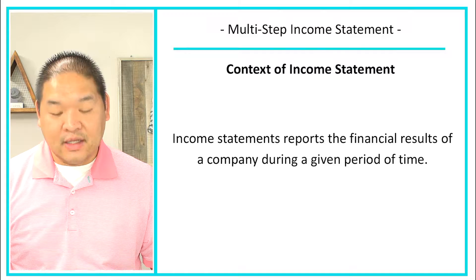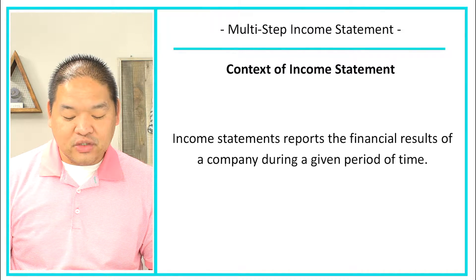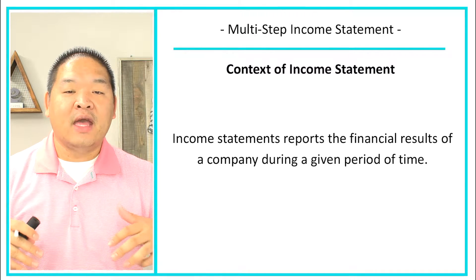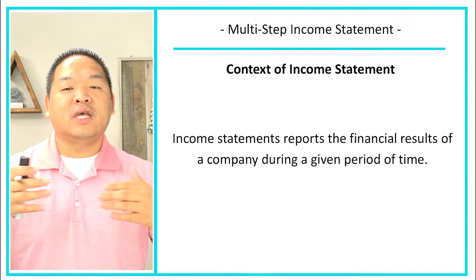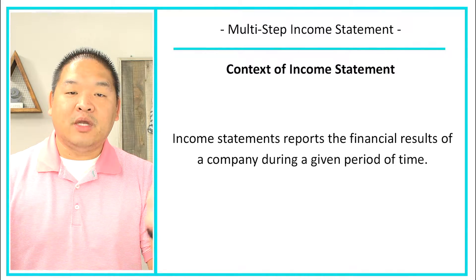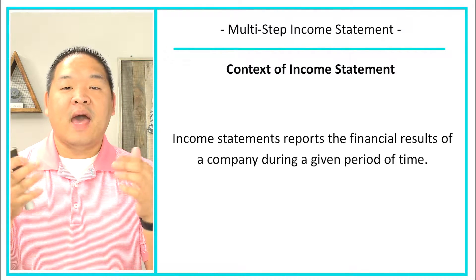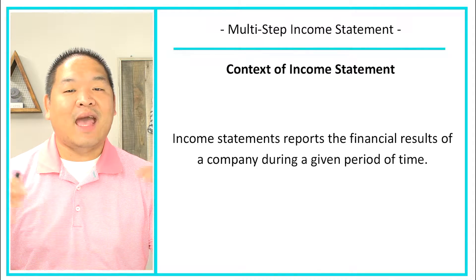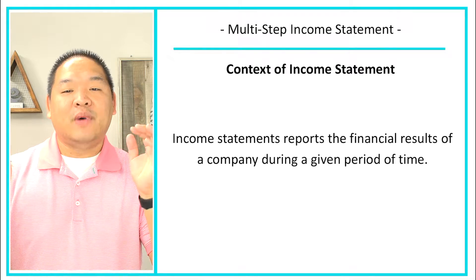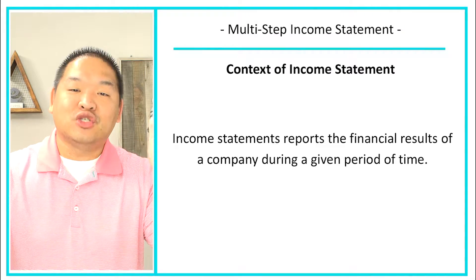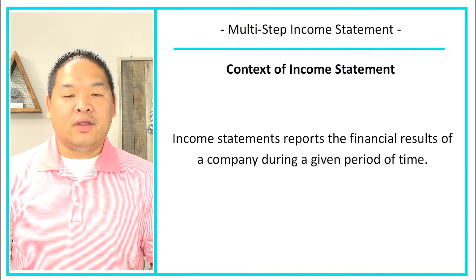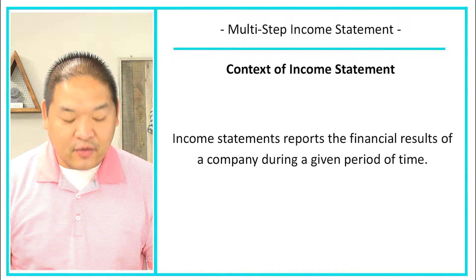The context of the income statement is that it reflects the financial results of a company during a given period of time. The income statement shows the results of a given time period — usually annually, but sometimes quarterly or monthly. For public companies, it's annually as well as quarterly. So every year we're reporting income for the company as well as expenses for that company.